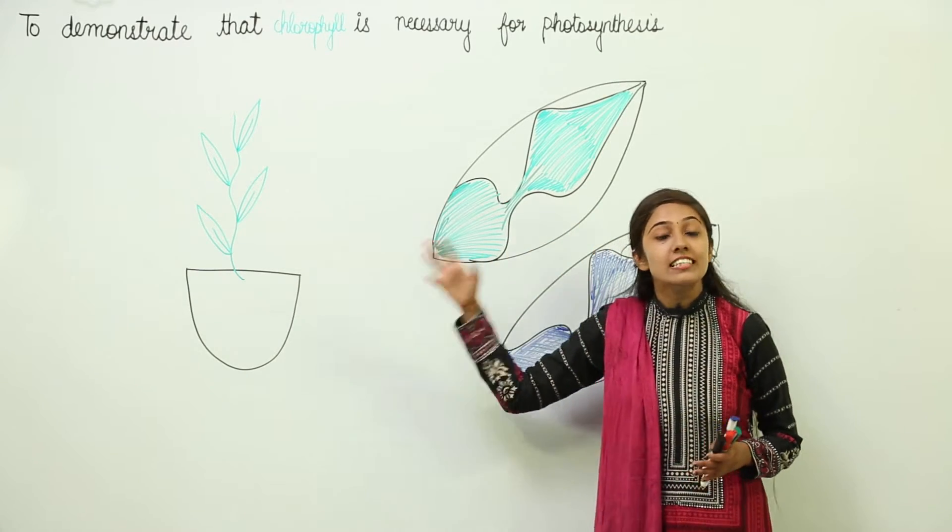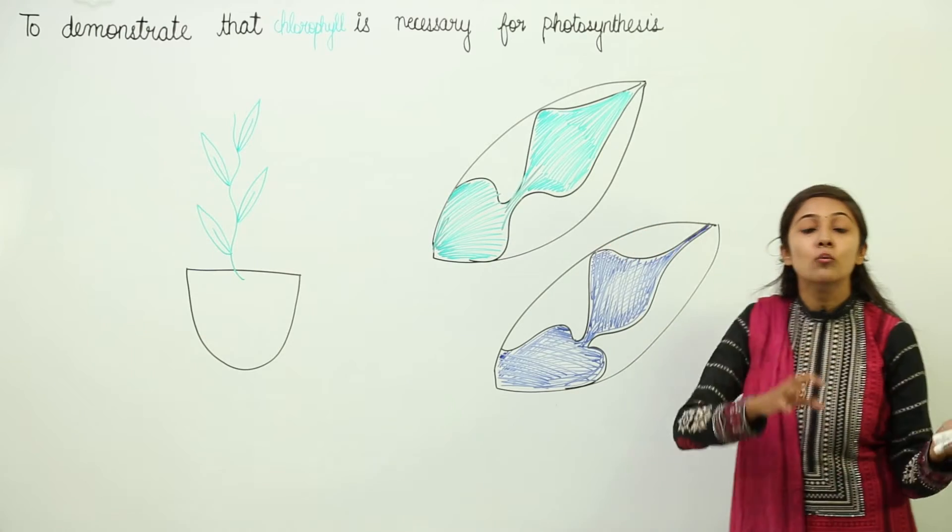What are variegated leaves? These are leaves which have patches of yellow and green color.